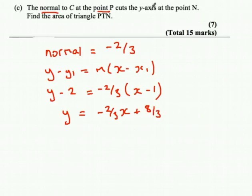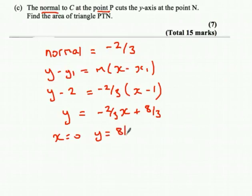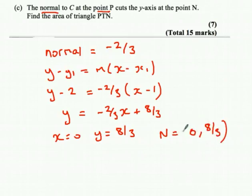We want to find where the normal crosses the y-axis. It crosses the y-axis when x is 0. Putting x equals 0 into the equation gives y equals 8 thirds. Therefore the point N is (0, 8/3).